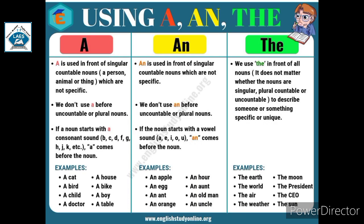Now we'll understand how to use A. A is used in front of singular countable nouns which are not specific. A कभी use किया जाता है जब singular countable noun हो, जैसे एक person, एक animal, या एक thing. We don't use A before uncountable or plural nouns. जब uncountable या plural noun दिखें तब A use नहीं करना है. For example, stars — वो uncountable और plural noun है, तो उसके आगे A use नहीं करेंगे.